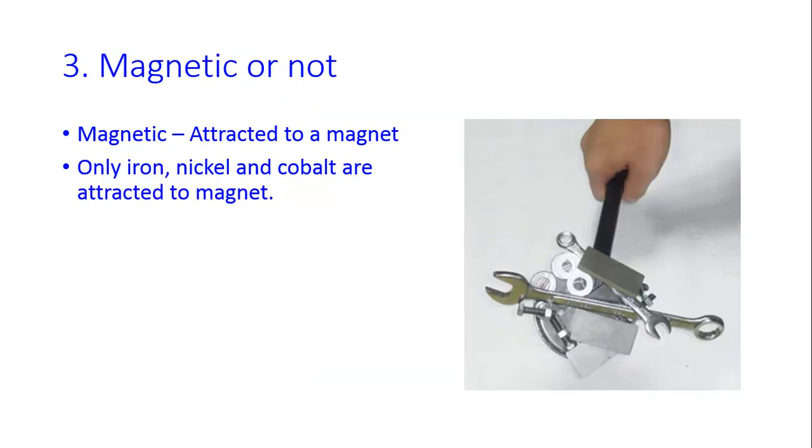The third property I want you to know, which is also in your textbook, is if the metal or the element is magnetic or not. And magnetic means to be attracted to a magnet. So of all the metals, there are only three metals that are attracted to magnets. And these are iron, nickel, and cobalt.